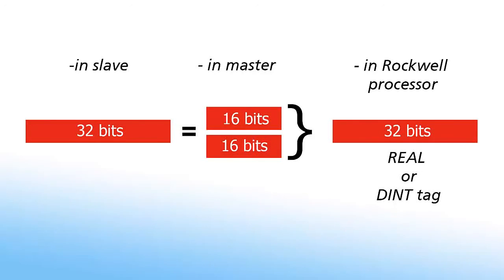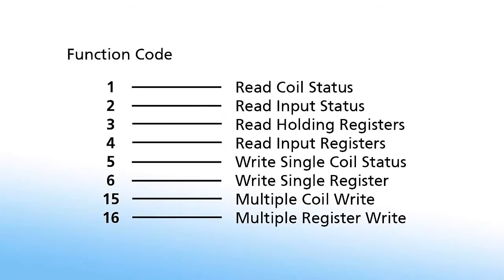Modbus function codes are simple numerical codes that tell the slave which table to access and whether to read or write to that table. Each function code relates to a specific data table address range. For instance, function code 1 is the code to read an individual bit status. Function code 16 is the code to write multiple holding registers. Here are some of the most commonly used function codes.